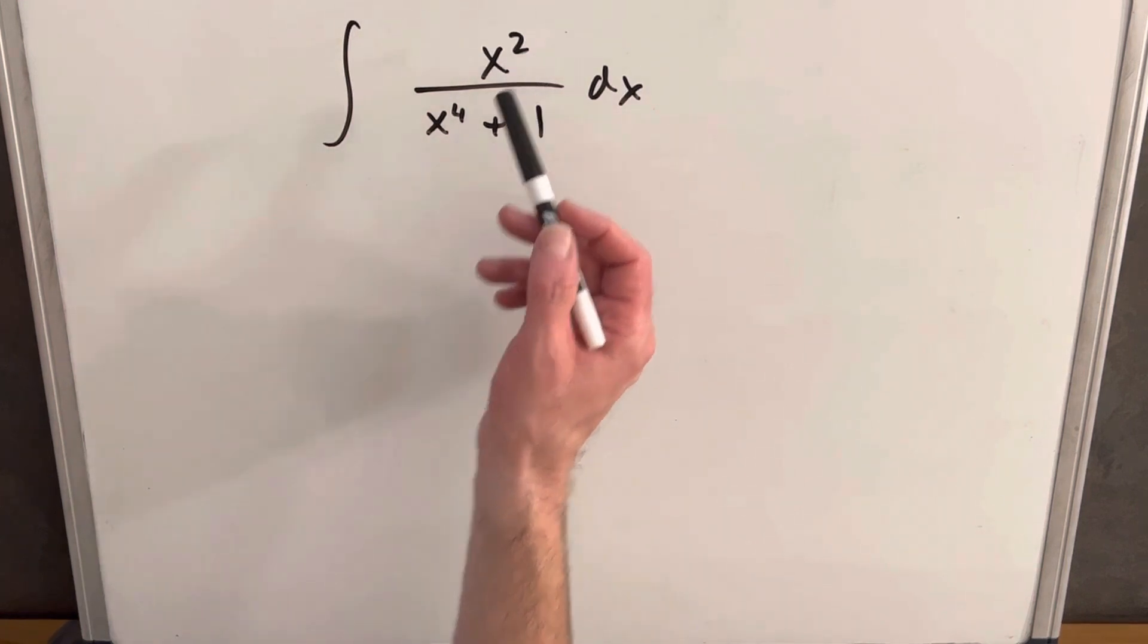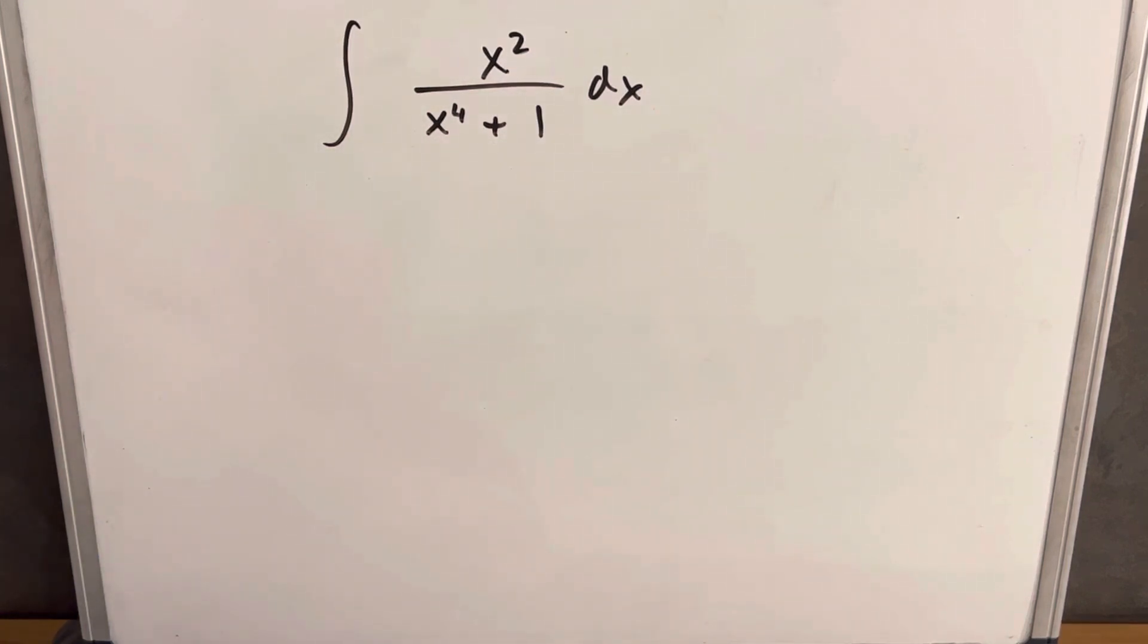You notice if this was an x cubed, we'd be really set up for a u substitution, but it's not quite as nice in this case. You can mess with it. Maybe you could figure something out with a u substitution, I just didn't try that.